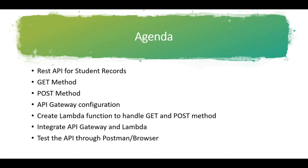I'll create a REST API for GET method and POST method, wherein you will be sending student details to the backend function through the POST method, and you can get the student record from the backend to your frontend using the GET method. We'll be configuring the API Gateway and creating a Lambda function which will handle GET and POST method implementation, then integrating both. Once integrated, we'll test through Postman or a browser to see how the data transfer happens.